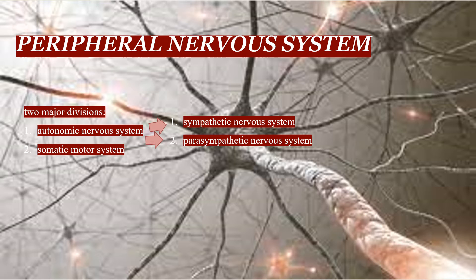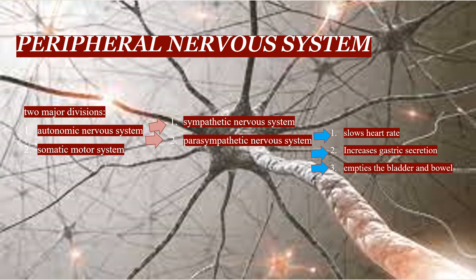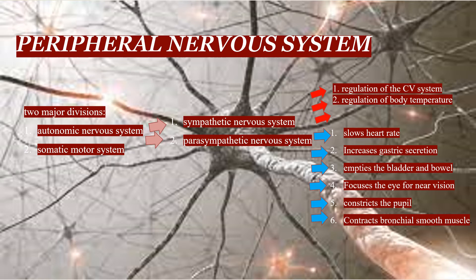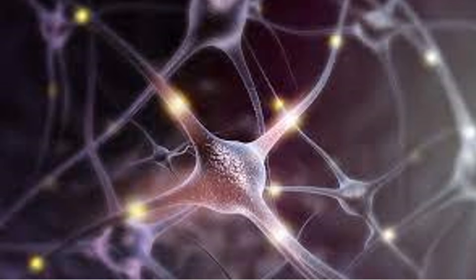The parasympathetic nervous system has several functions relevant to pharmacology: it slows the heart rate, increases gastric secretion, empties the bladder and bowel, focuses the eye for near vision, constricts the pupils, and contracts bronchial smooth muscle. The principal functions of the sympathetic nervous system are the regulation of the cardiovascular system, regulation of body temperature, and implementation of the fight-or-flight response.